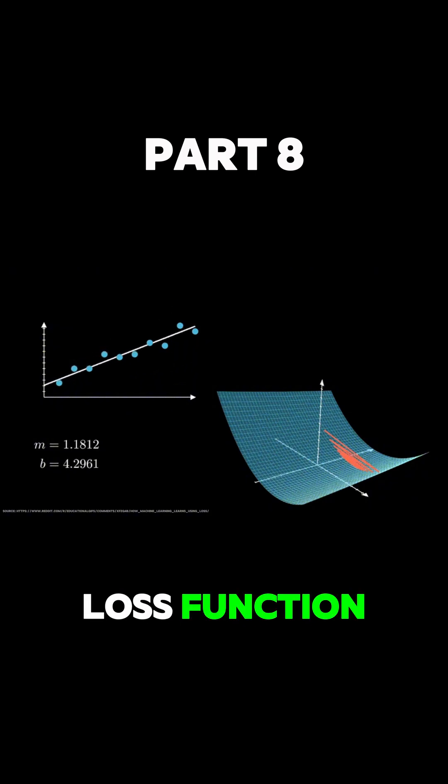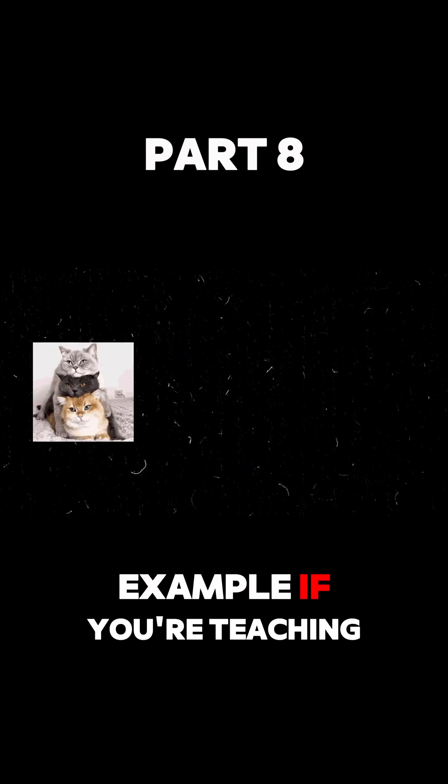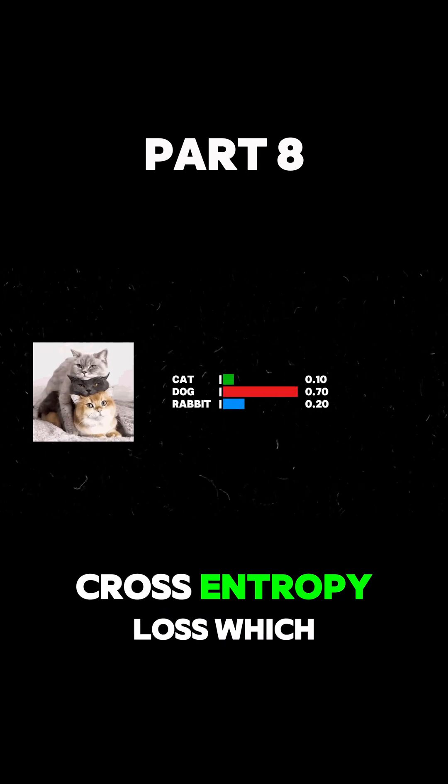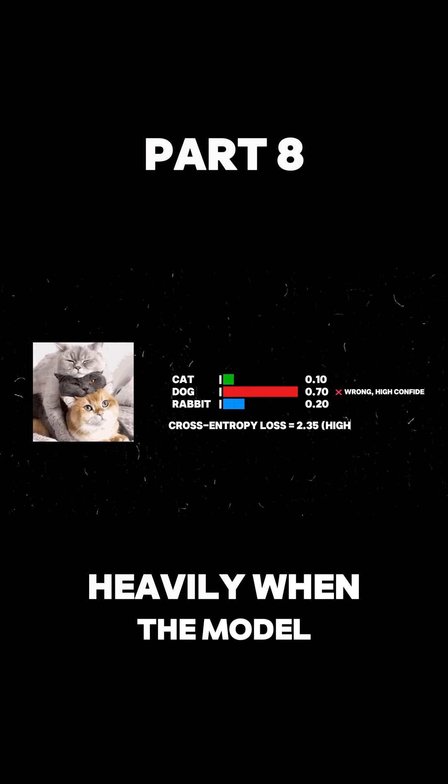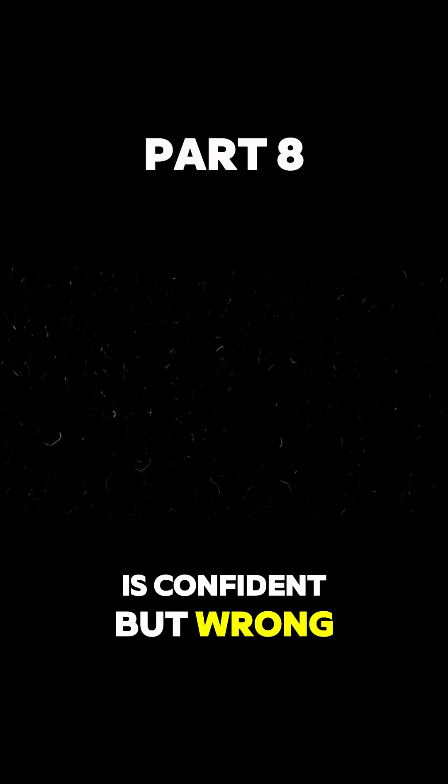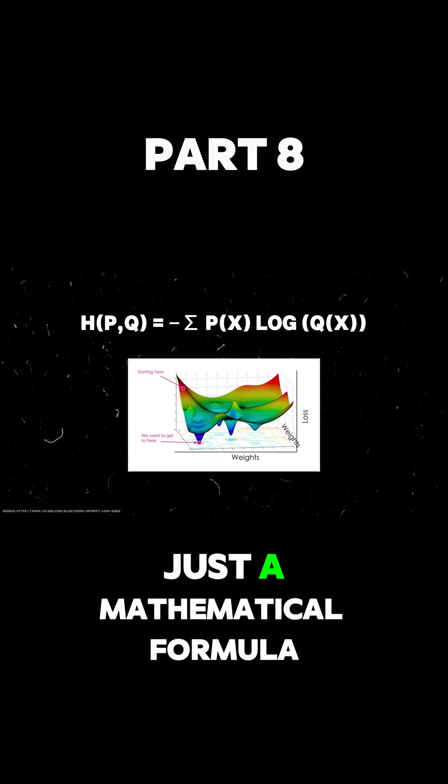For example, if you're teaching a model to recognize cats, you might use cross-entropy loss, which penalizes wrong guesses more heavily when the model is confident but wrong. This loss function is just a mathematical formula.